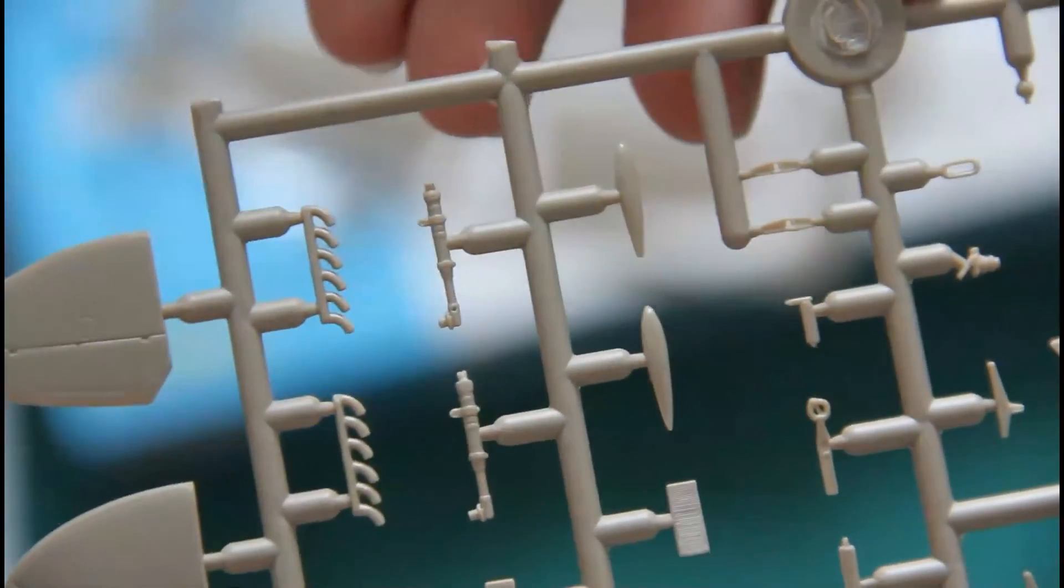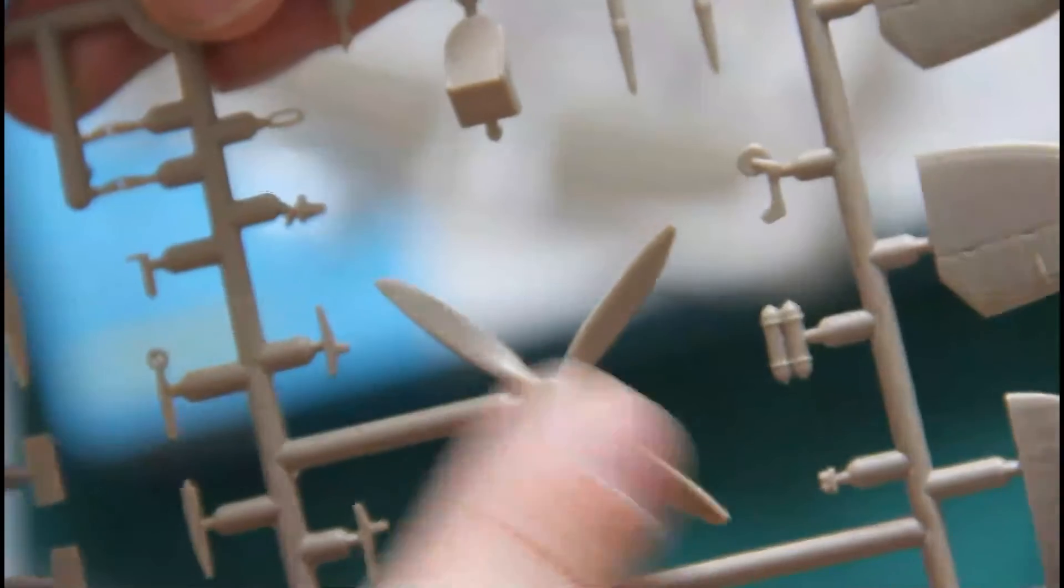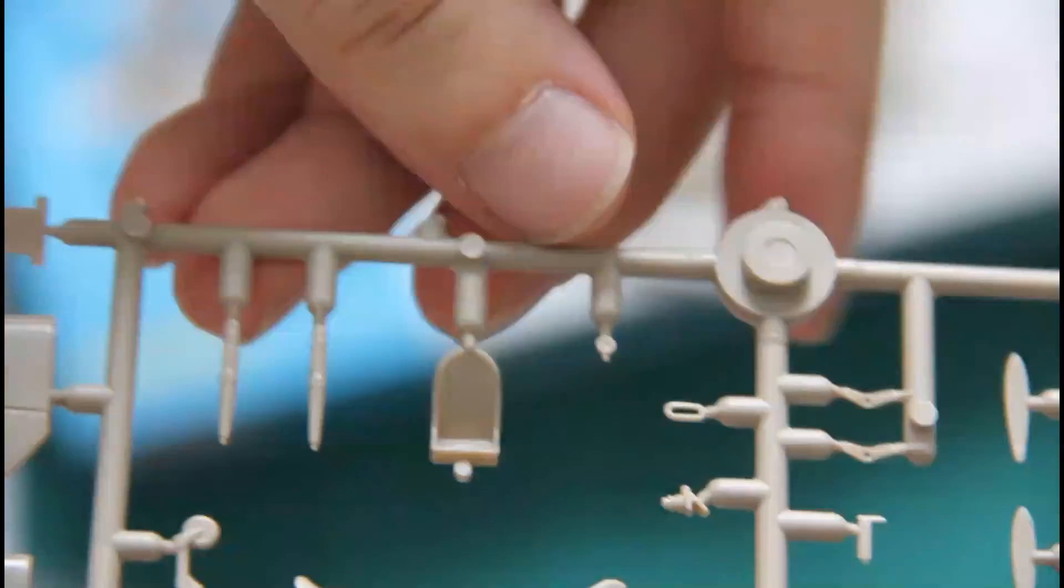Here we have tail planes, rudder, exhausts, landing gear struts. Everything is molded just as it should be. And here is a propeller, which is molded together with blades. Even the seat is molded nicely. Detailization is quite okay for such scale.